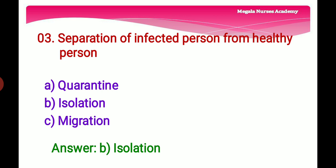Third question: Separation of an infected person from a healthy person — Option A: Quarantine, which is the separation and restriction of movement of persons who are not ill. Option B: Isolation, the act of separating something from other things. Option C: Migration, moving from one place to another. The right answer is Option B, isolation.